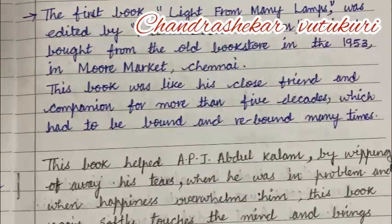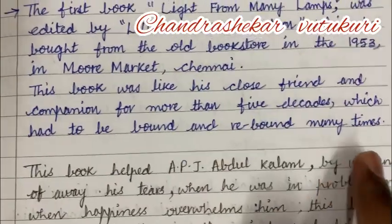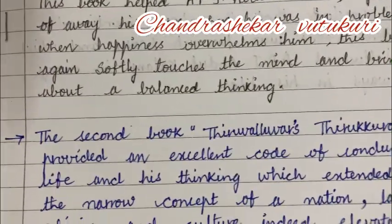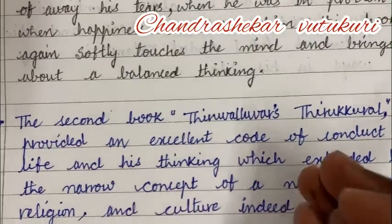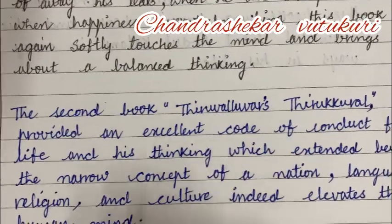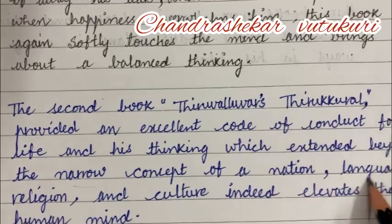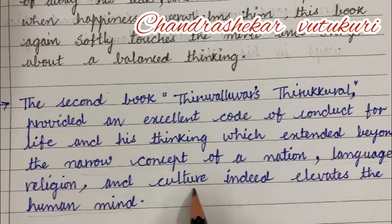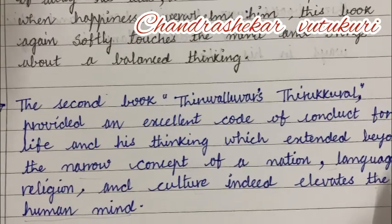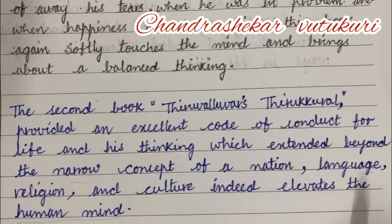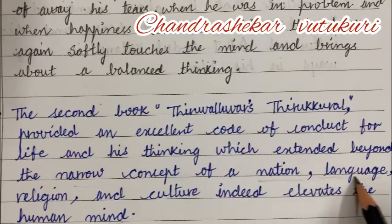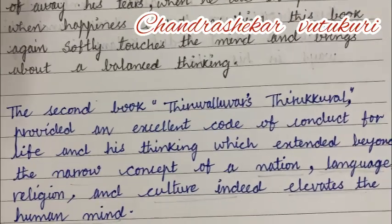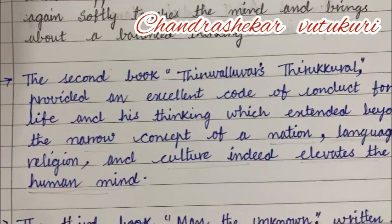In this step-by-step sequential order you are supposed to write, leaving one line and making sure to write with neat handwriting using two pens. For the second book, what made him influenced is a narrow concept of nation, language, religion, and culture — indeed it elevates the human mind — which made him influenced by the second book. Make sure if you want to underline, you can underline certain highlighted things in pencil so it may attract the evaluator.